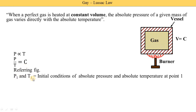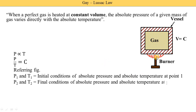P1 and T1 are the initial conditions of absolute pressure and absolute temperature at point 1. We measure the pressure and temperature of the gas initially — when we are not supplying heat energy, it is called state 1. We fill the gas in the vessel, measure its pressure using a pressure gauge and temperature using a thermometer, and note them down.